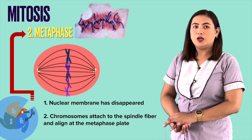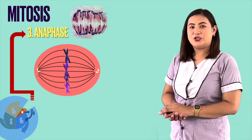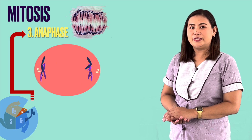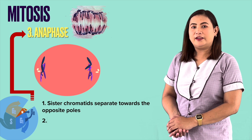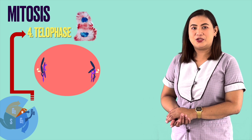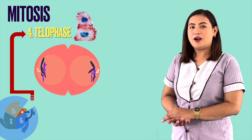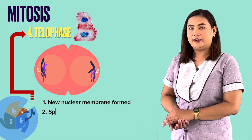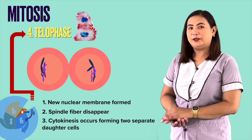Each spindle fiber binds to a protein called the kinetochore at the center of each sister chromatid. In anaphase, the paired centromeres of each chromosome separate toward the opposite poles of the cell as they are pulled by the spindle fibers through their kinetochores, separating the sister chromatids. Each chromatid is now regarded as a full-fledged chromosome. In telophase, chromosomes are at the opposite poles and begin to uncoil. A new nuclear membrane forms around them while the spindle fibers disappear. Cytokinesis, or the division of the cytoplasm, occurs to form two separate daughter cells immediately after mitosis.